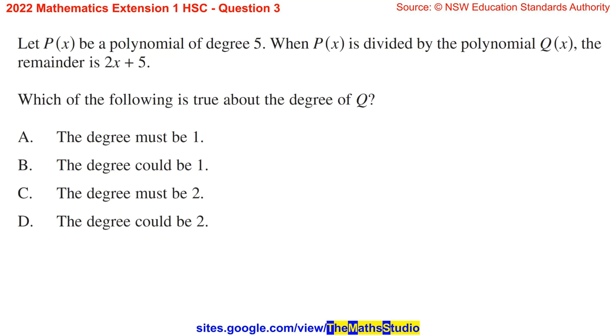Question 3. Let p of x be a polynomial of degree 5. When p of x is divided by the polynomial q of x, the remainder is 2x plus 5. Which of the following is true about the degree of q?